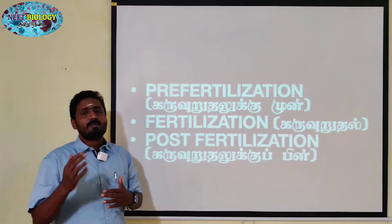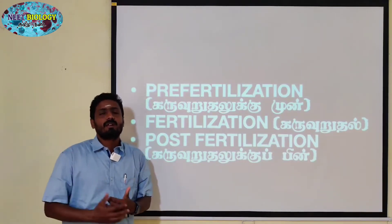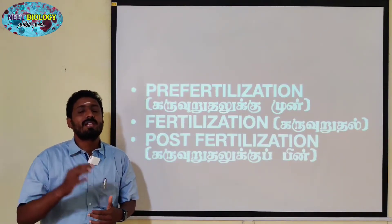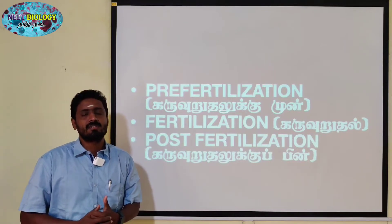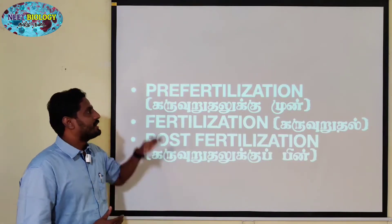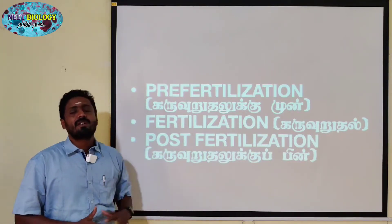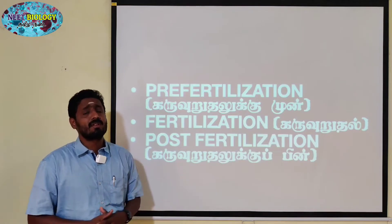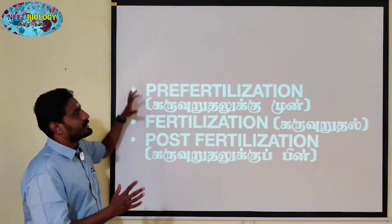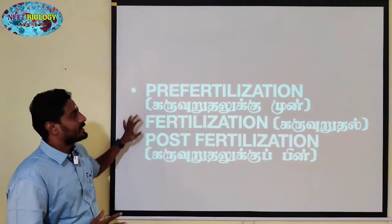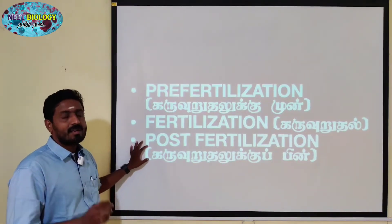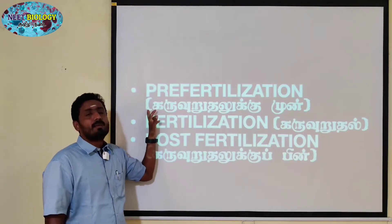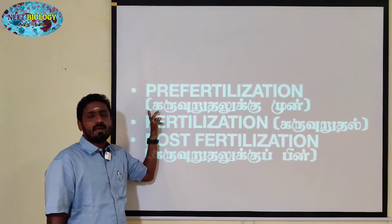For human beings and animals, there is the juvenile phase. Then pre-fertilization. And the third stage is double fertilization.